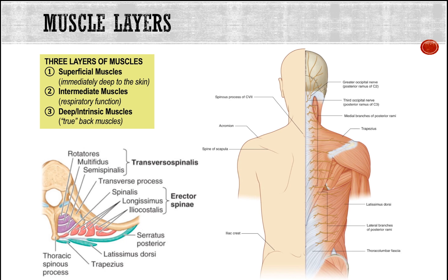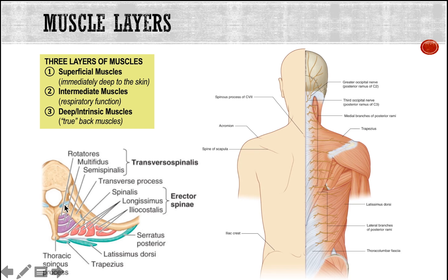To visualize these three layers of muscles, the best way is to look at a cross-sectional view. The superficial and intermediate muscles are depicted in light blue or green. Most medially we have the trapezius and latissimus dorsi as part of the superficial muscle group. Just deep to this we have serratus posterior as part of the intermediate group, purely respiratory in function. In red and purple we have the deep muscles, subdivided into the erector spinae — the most lateral and vertical — and the transversospinalis, which runs between the transverse and spinous processes.